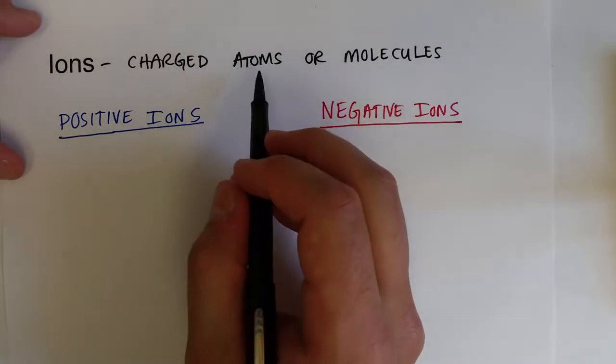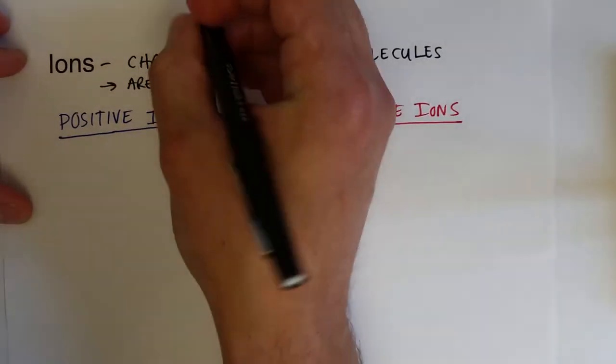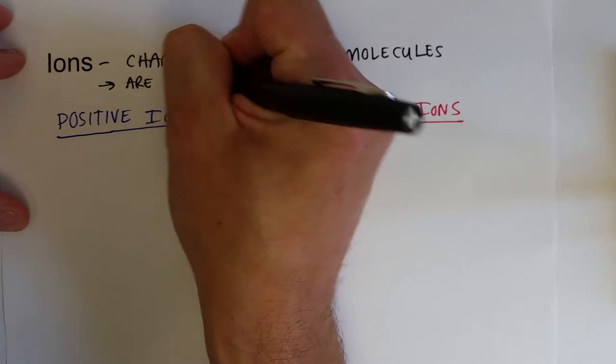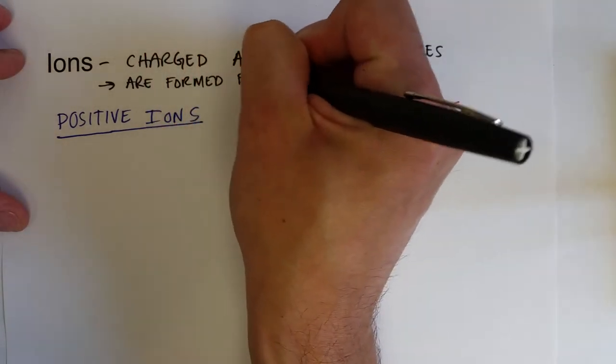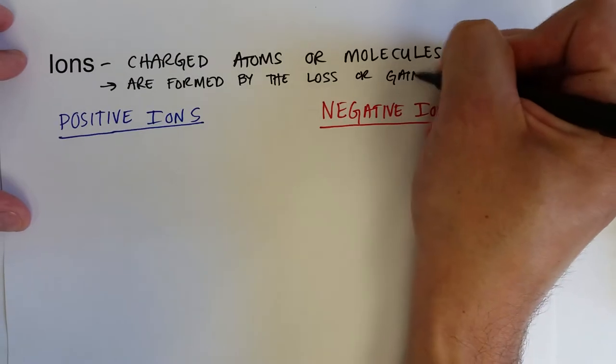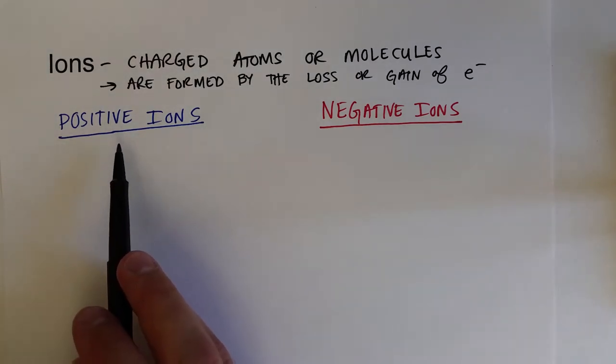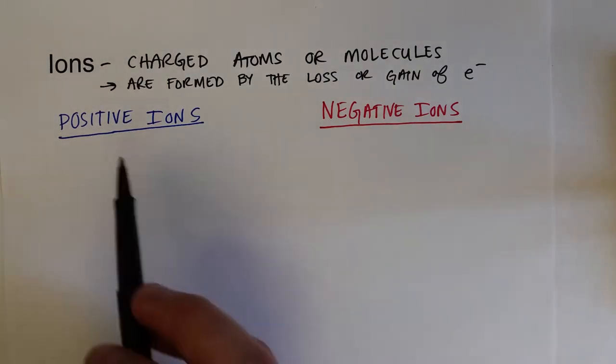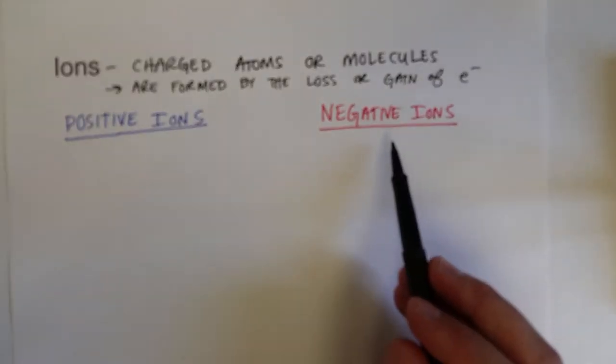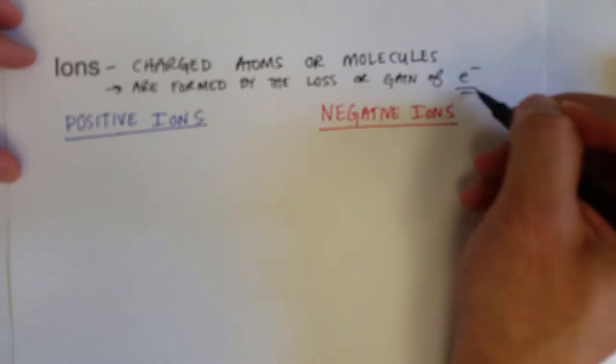Now, ions, especially when we're talking about atoms, are formed by the loss or gaining of electrons. We're never going to form a positive ion by losing a proton from the nucleus, or gaining a proton in the nucleus. Or we're never going to form a negative ion by losing a proton in the nucleus. That's nuclear chemistry. And for ions, we're talking about chemical reactions, which are only going to involve electrons.